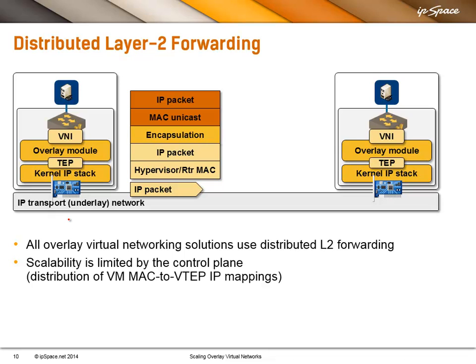More or less, all overlay virtual networking solutions offer some sort of layer 2 forwarding. A VM sending a packet to another VM in the same segment sends it straight to the other VM's MAC address — unicast, or broadcast if doing ARP. This MAC header gets encapsulated into an IP packet, and the crucial question is how we get the destination hypervisor's IP address into that IP packet before it's sent over to the other hypervisor.